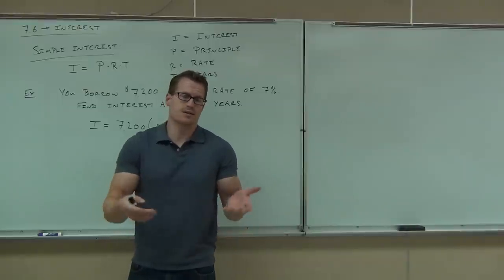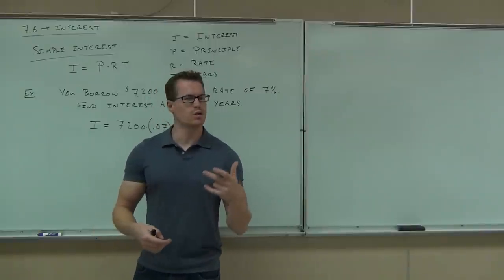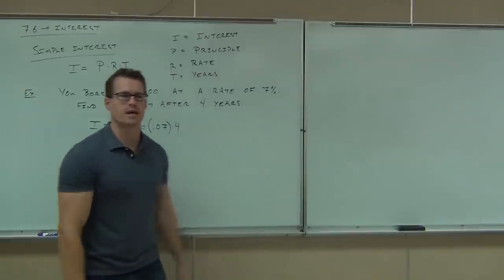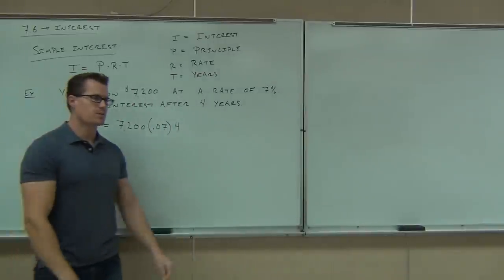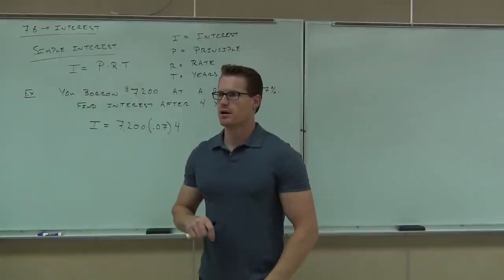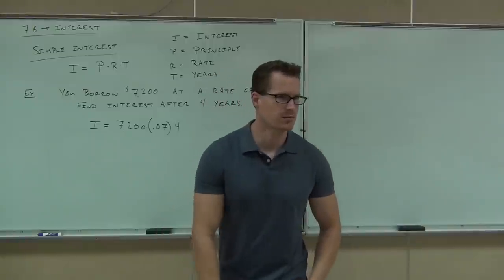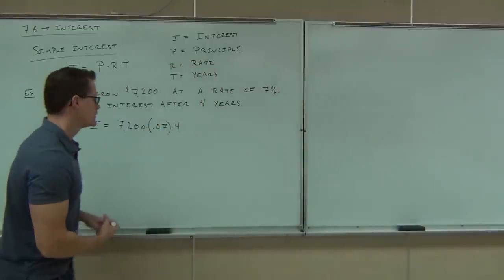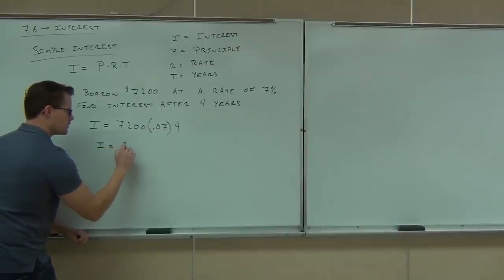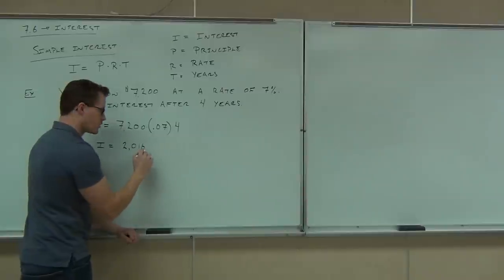In this class, being off by a penny means you miss a problem. I want exact answers because this is about money, and people get very serious about it. If you short someone a couple bucks, they're going to get upset. So we're going to be to the penny accurate. Punch in 7,200, press times, press .07, press enter, then times 4, enter. Round to the pennies, not to the dollars. The answer is $2,016.00.